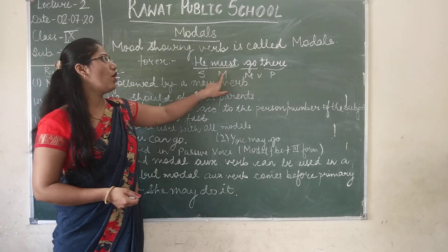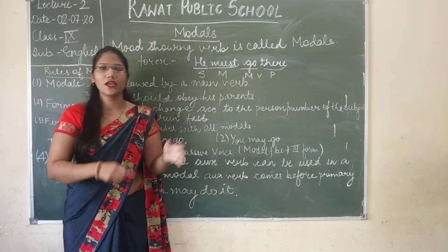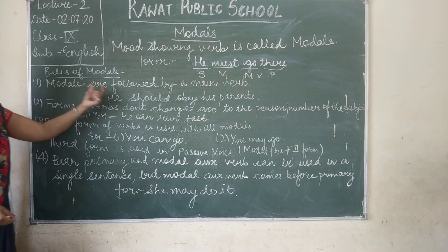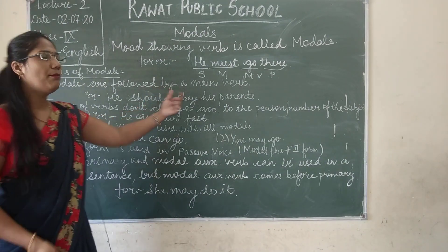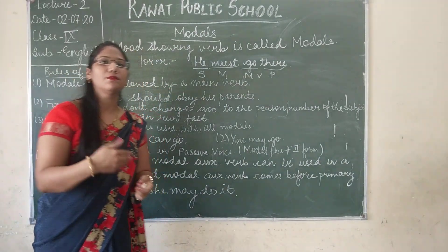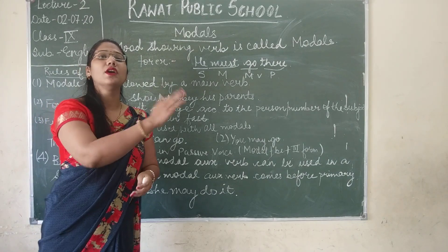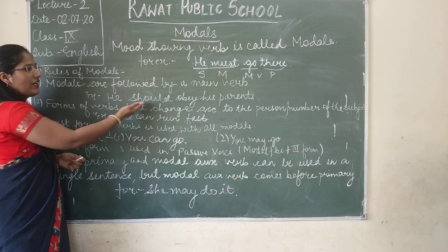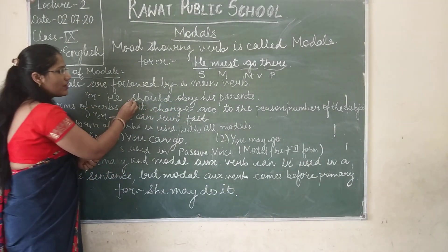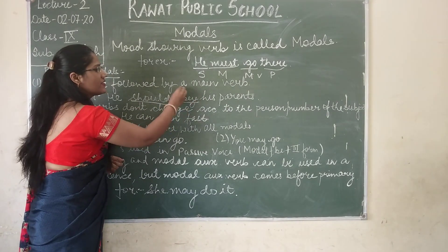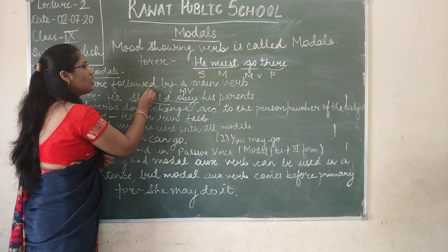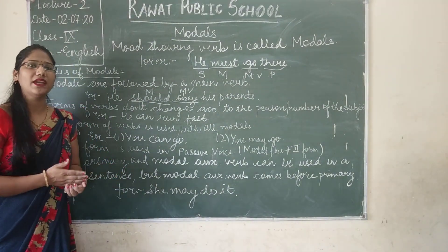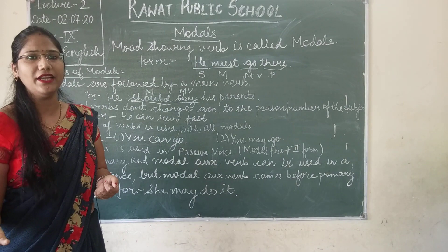Rule 1: Modals are always followed by a main verb — the modal comes just before the main verb. For example, 'he should obey his parents.' Here 'should' is the modal and 'obey' is the main verb. Modals are a sort of helping verb that help the main verb to complete the action.